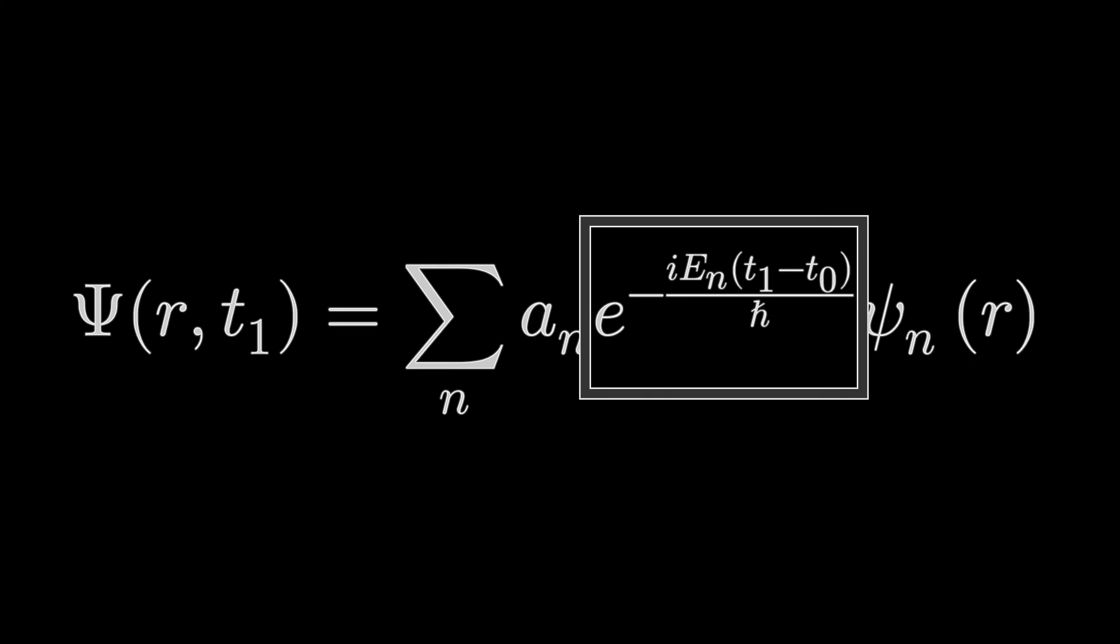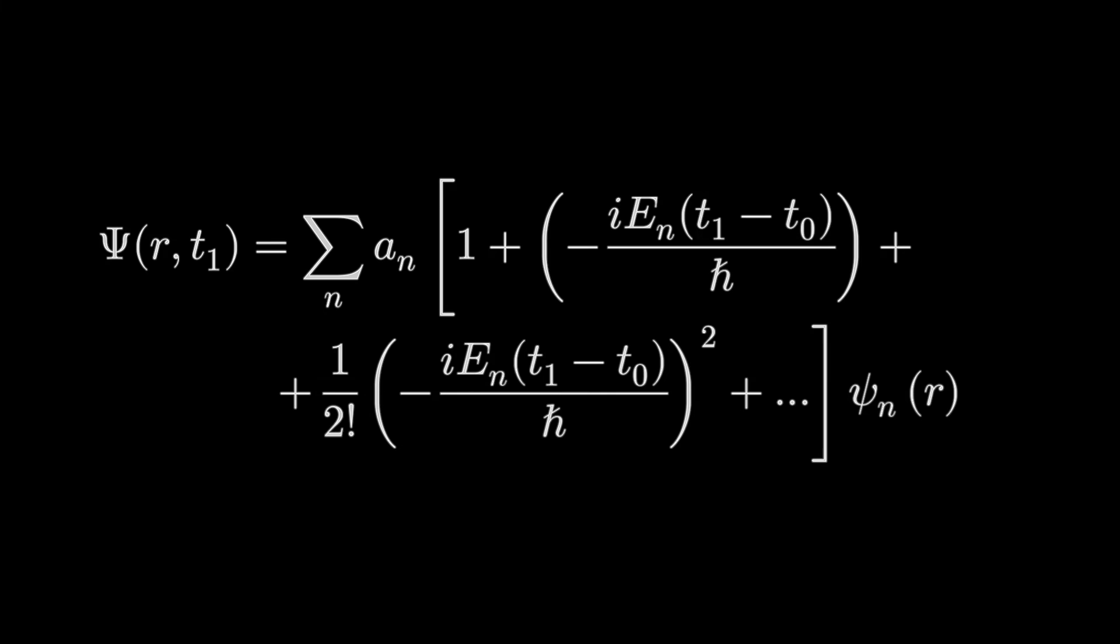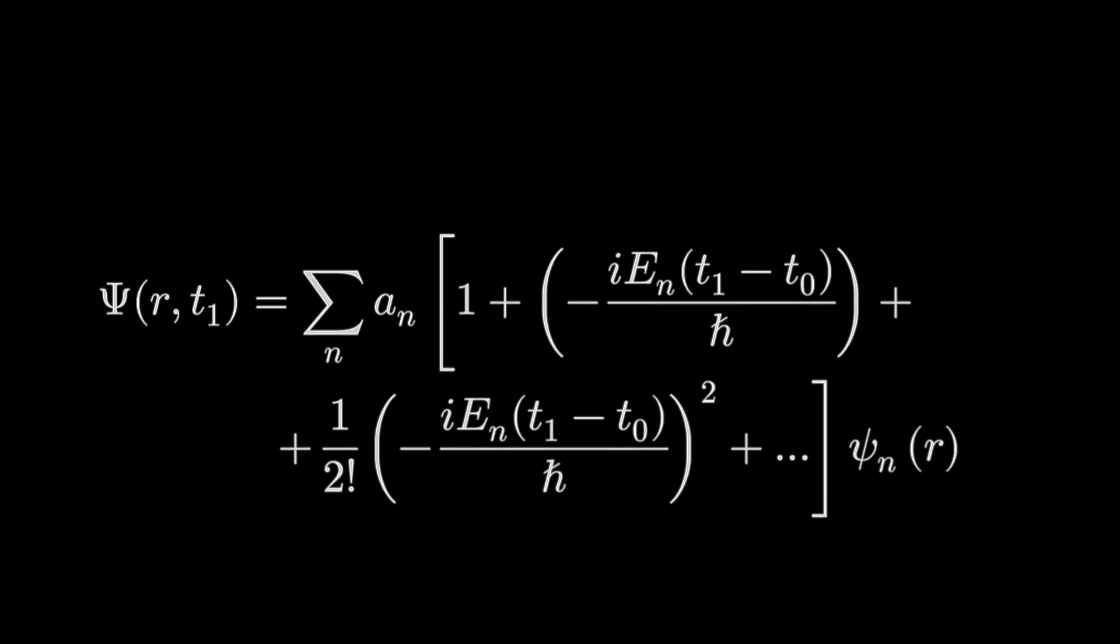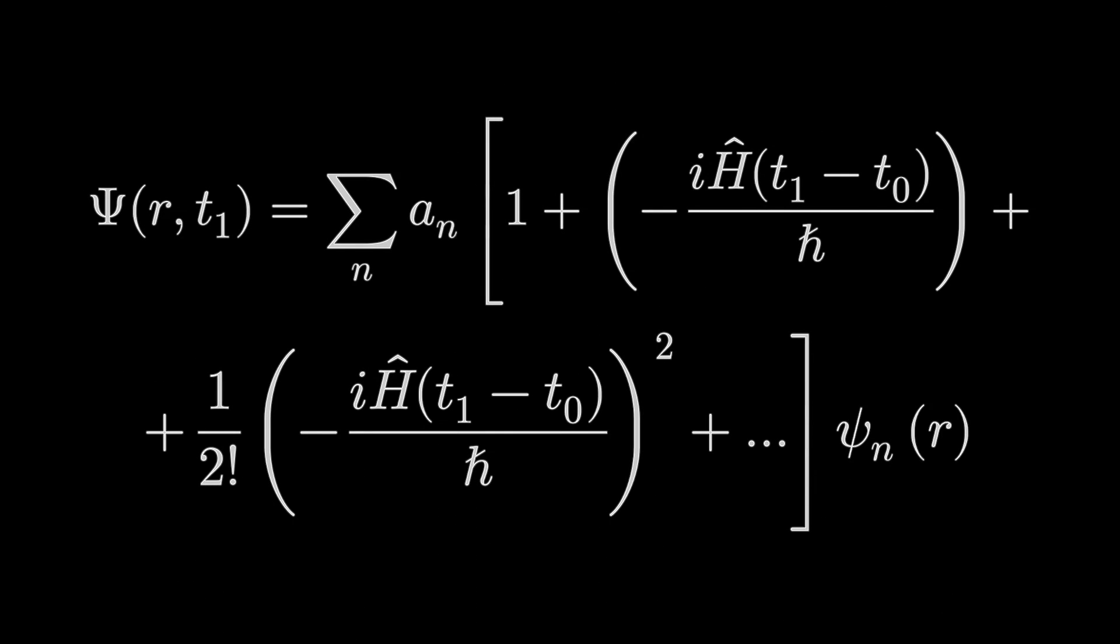So, for the expression of our time-dependent factor, which is a ratio over e, we can take the Taylor series of it and expand it as this, because that factor is basically e to the power of x, where x is our time-dependent factor. In this expansion from our previous knowledge, where H-hat to the power of m of ψn(r) equals nth energy state to the power of m of ψn(r), we write the whole expression as this.